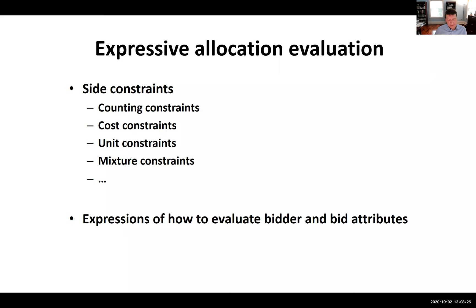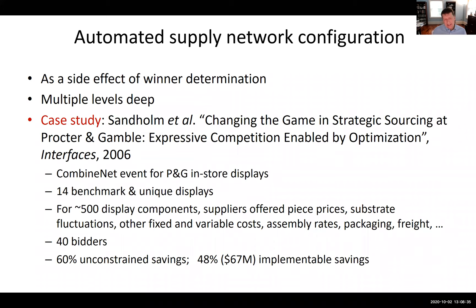There were also expressions of how to evaluate bidder and bid attributes — how does the buyer value different vectors of attributes on bids? Typically in supply chain, the supply network would be designed first and then you would source to the network. Here we did the opposite: we sourced to all possible supply networks, and the winner determination as a side effect configures the supply network as well, multiple levels deep.